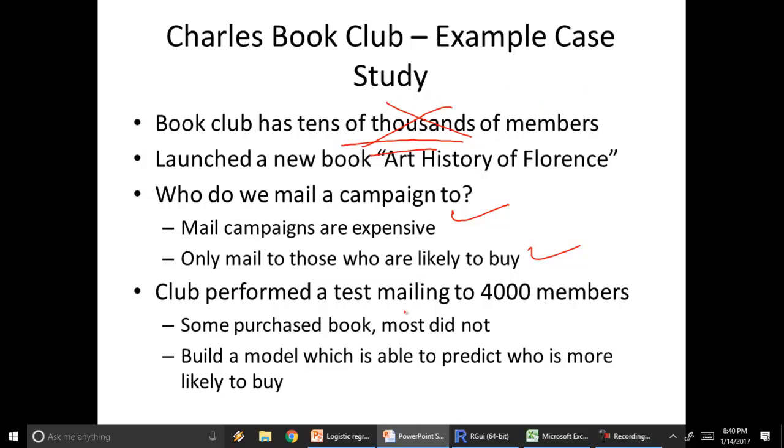A better way is to build a predictive model which is going to identify amongst these tens of thousands who is going to buy. To do this, they've done a test mailing to about 4000 members randomly. They did a simple random sample, an SRS, which we've covered before.